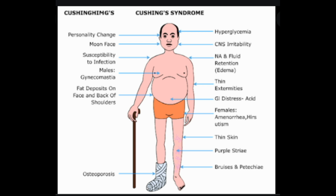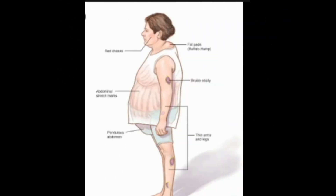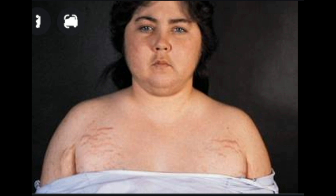Additional symptoms include excessive hair growth (hirsutism) on the face, neck, chest, abdomen, and thighs, female balding, generalized weakness and fatigue, blurry vision, vertigo, muscle weakness, menstrual disorders in women (amenorrhea), decreased fertility and/or sex drive, hypertension, poor wound healing, and diabetes mellitus.